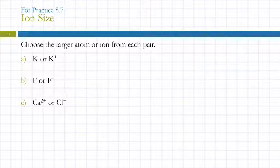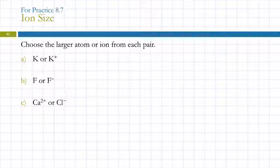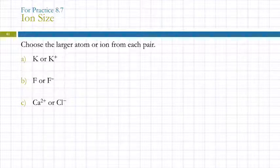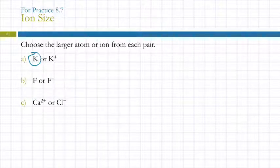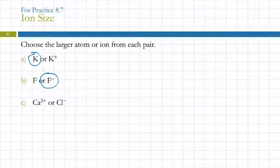Choose the larger atom or ion from each pair. Potassium atom or potassium ion? The atom — when you remove an electron to make a positive ion, it gets smaller. Fluorine or fluoride? Fluoride — we're adding electrons, which makes it bigger. Calcium ion or chloride ion?